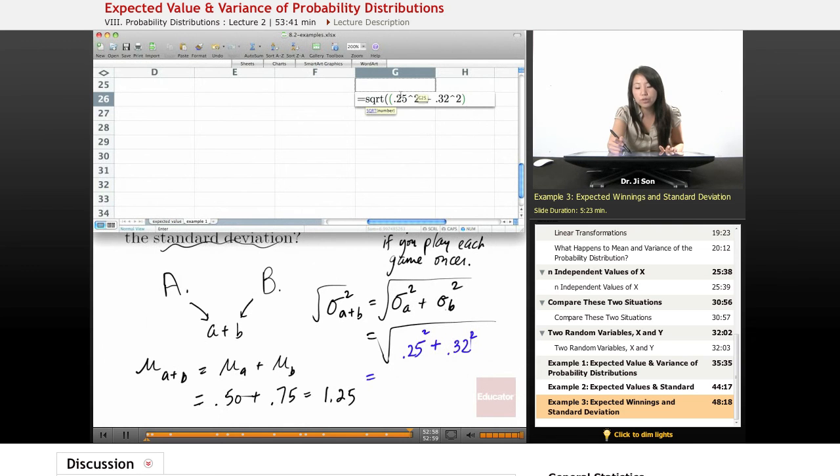Excel knows that it needs to do the powers, the exponents first, and then add them together. And then all of that, square root of all of that, square root of that sum. And we get 0.406.